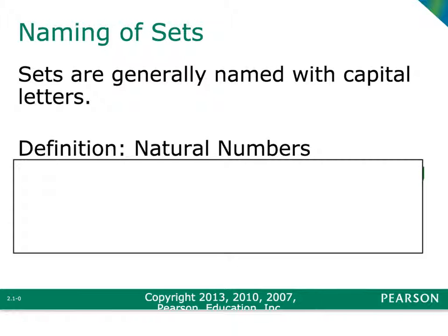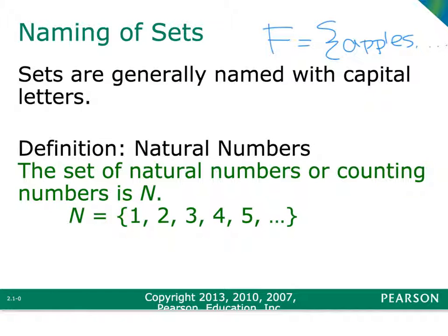Often you are going to give your set a name, and typically you name your set with capital letters. For example, if I was talking about the set of fruit, I might call that set F, list F as a capital letter, and then start listing my fruit inside it, like apples, bananas, whatever. One of the sets we use often is the set of natural numbers. Natural numbers can be considered your counting numbers — when you learned to count as a kid, you started with 1. Natural numbers go on forever through 1, 2, 3 to infinity, with no decimals, no fractions, no negatives, and no zero.